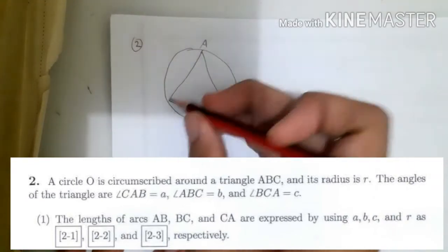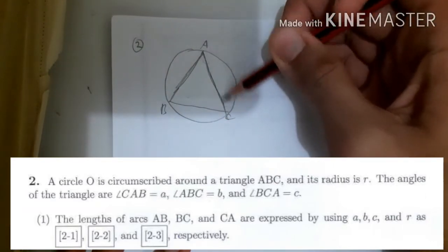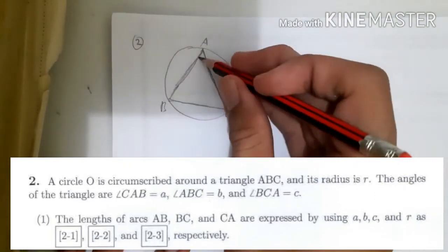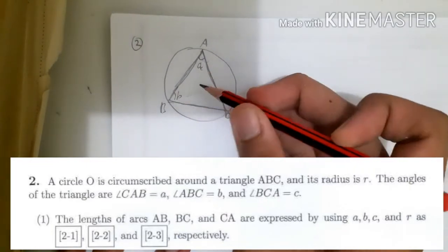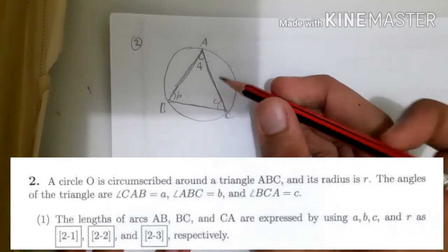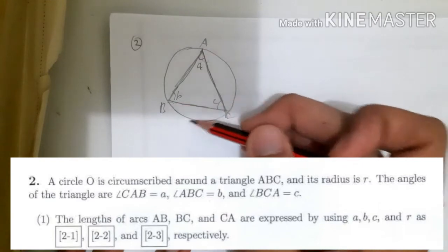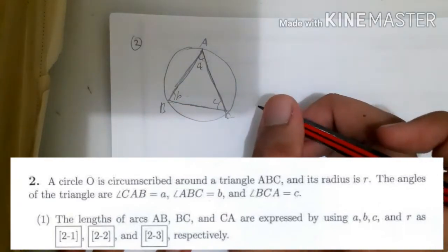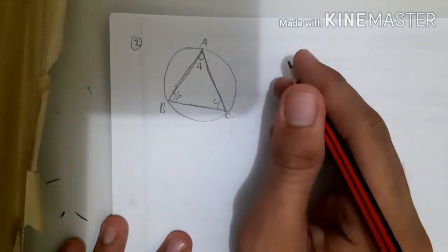So let's say this is A, B, and C. You can see that angle CAB is A, angle ABC is B, and angle BCA is C. We need to find the length of arc AB, arc BC, and arc BCA, and express them using A, B, C, and R — where A, B, C are the angles and R is the radius.